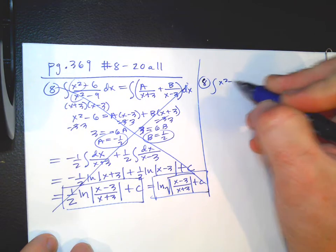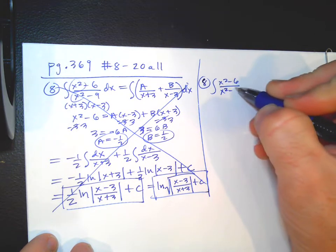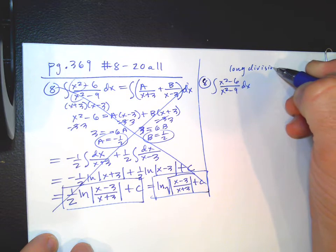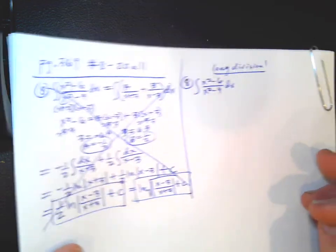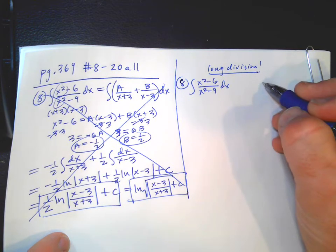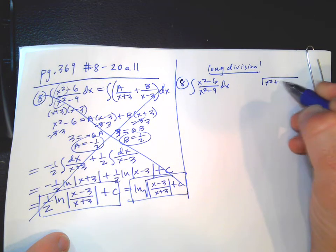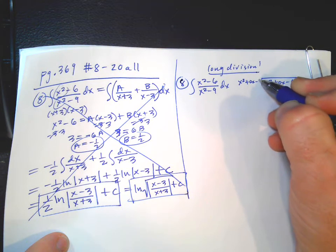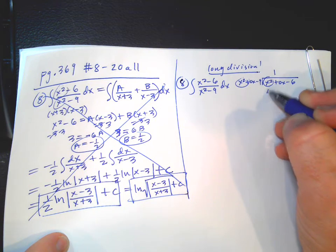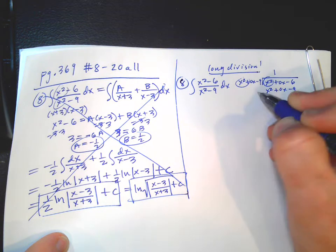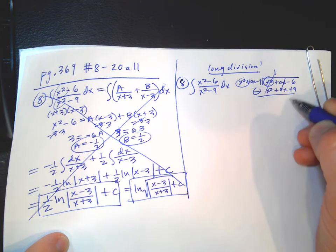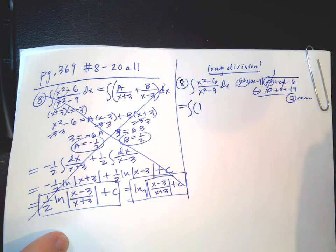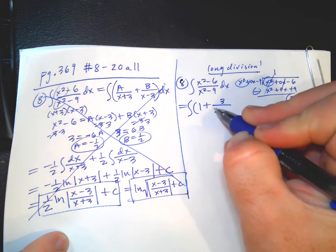Whenever the degree of the top is greater than or equal to the bottom, you need to do long division. So we do: X squared plus 0X minus 6, divided by X squared plus 0X minus 9. The first term divides to 1, giving X squared plus 0X minus 9. We subtract, and we get 3 as the remainder. So we rewrite this as 1 plus 3 over X squared minus 9.